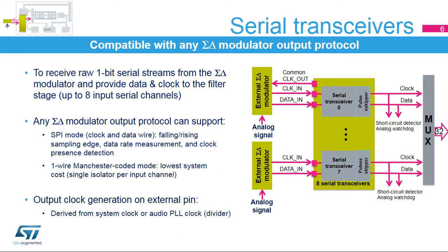Serial transceivers provide the connection to the external sigma-delta modulator. SPI mode works up to 20 MHz, or the DFSDM clock divided by 4. There are configurable options including sampling edge selection, data rate measurement, and clock presence monitoring. One-wire Manchester-coded mode, where clock is recovered from the data, works up to 10 MHz, or DFSDM clock divided by 6. A synchronized detection feature is also available in Manchester mode.